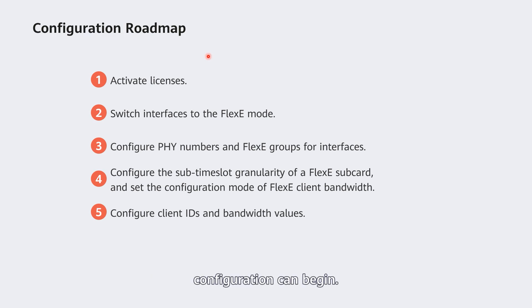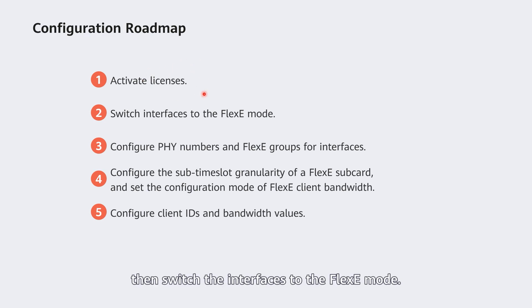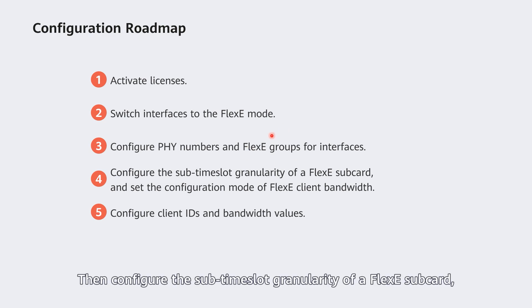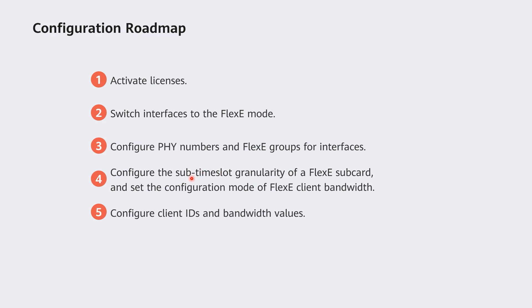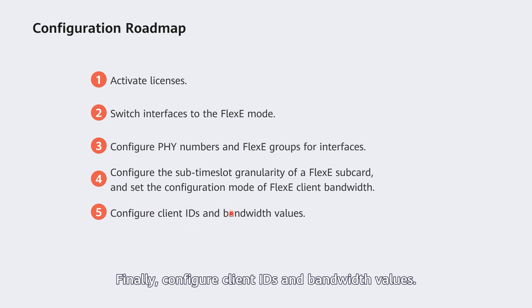After these preparations are complete, configuration can begin. Look at the configuration roadmap: first activate licenses, then switch the interfaces to flexi mode. Next, configure PHI numbers and flexi groups for the interfaces, then configure the sub time slot granularity of a flexi subcard, set the configuration mode of flexi client bandwidth, and finally configure client IDs and bandwidth values.